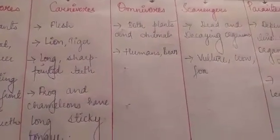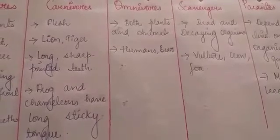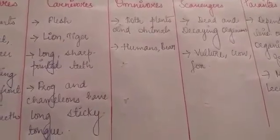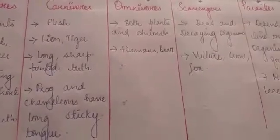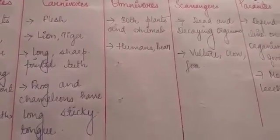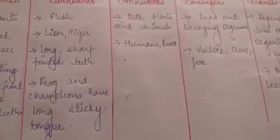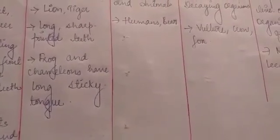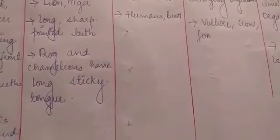Carnivores are animals which eat flesh, for example tiger and lion. Their common feature is long, sharp pointed teeth so they can tear flesh easily. Frogs and chameleons eat insects, so they have a long sticky tongue.